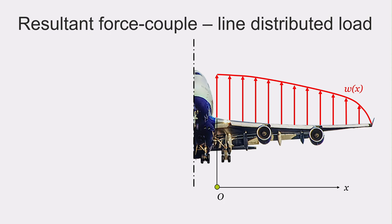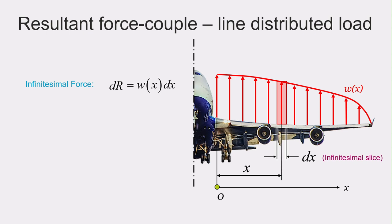In order to do this, we will first look at a small infinitesimal force that we will call dr. dr will be acting at a distance x, and it is an infinitesimal force caused by a small slice of our distributed load dx. So just like previously, where dr was the pressure times the area dA, for a line load, dr will be our distributed load w of x times the width, because it's one dimensional.